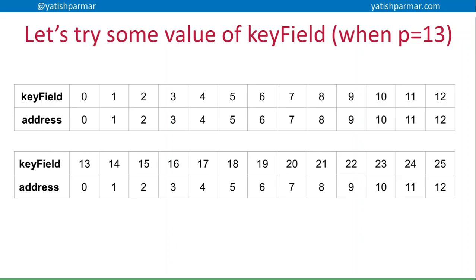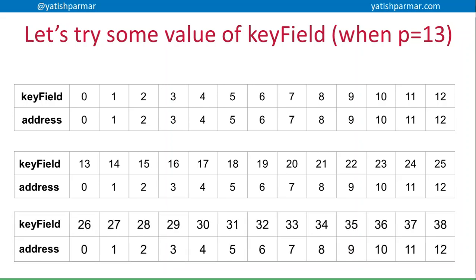15 gives me an address of 2, 25 gives me an address of 12, then 26 gives me an address of 0 again. So you can start to see what some of the problems might be with this.